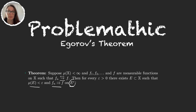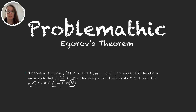Another thing to notice is that in this theorem we're asking for both our sequence and our function f to be measurable, because it could happen that a sequence of measurable functions converges to a function f that's not measurable. That might happen unless our measure is complete, and instead of asking to have a complete measure it's just easier to ask for both the sequence and the limit function f to be measurable. Okay so let's start with the proof.